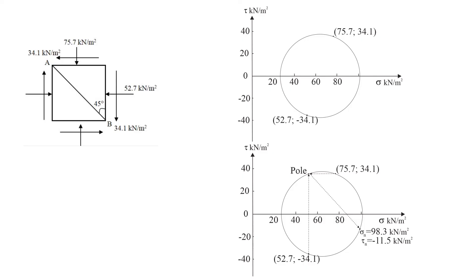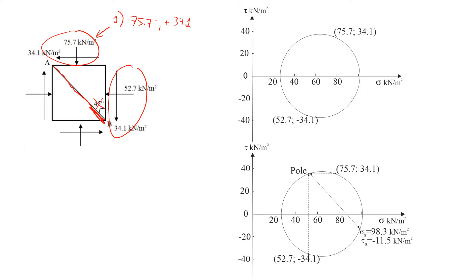Now let's look at the second example. We have different stresses with different directions and another line AB inclined at 45 degrees, and we'll find stresses acting on this plane. Again, we follow the same graphical procedure — only drawing parallel lines. The first step is to draw Mohr's circle, so we identify two points. Point 1 has a normal stress of 75.7 and shear stress of +34.1 (counterclockwise, positive).